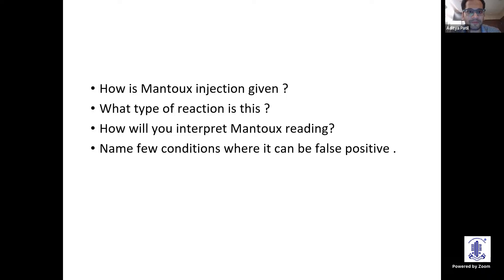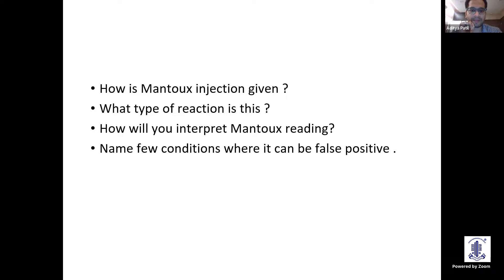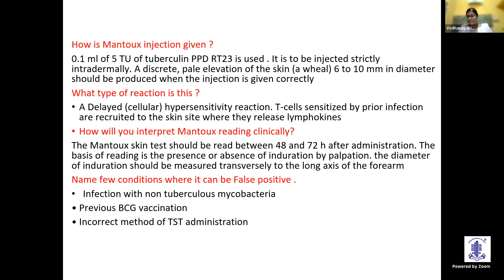The question is: how is Mantoux injection given, what type of reaction is this, how do you interpret the Mantoux reading, and can you name conditions where it can be false positive? Dr. Ajit answered: Mantoux is given subdermally with 5–10 tuberculin units; this is a necrotic Mantoux reaction; interpretation requires measuring induration — using a pen from the periphery to the center from four sides, measuring the diameter in millimeters. False positives include BCG vaccination.